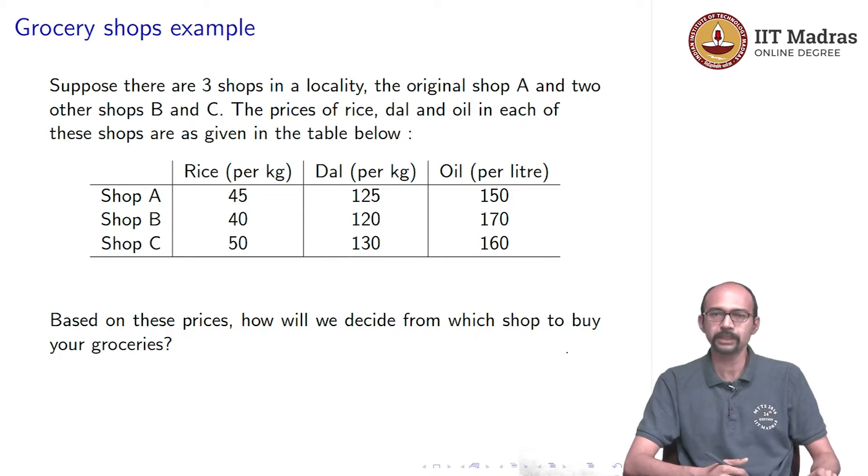In shop A, we already have seen that it is 45 rupees per kg for rice, 125 rupees per kg for dal and 150 rupees per liter for oil. And for shop B, we have 40, 120 and 170 respectively and shop C, we have 50, 130 and 160 respectively.